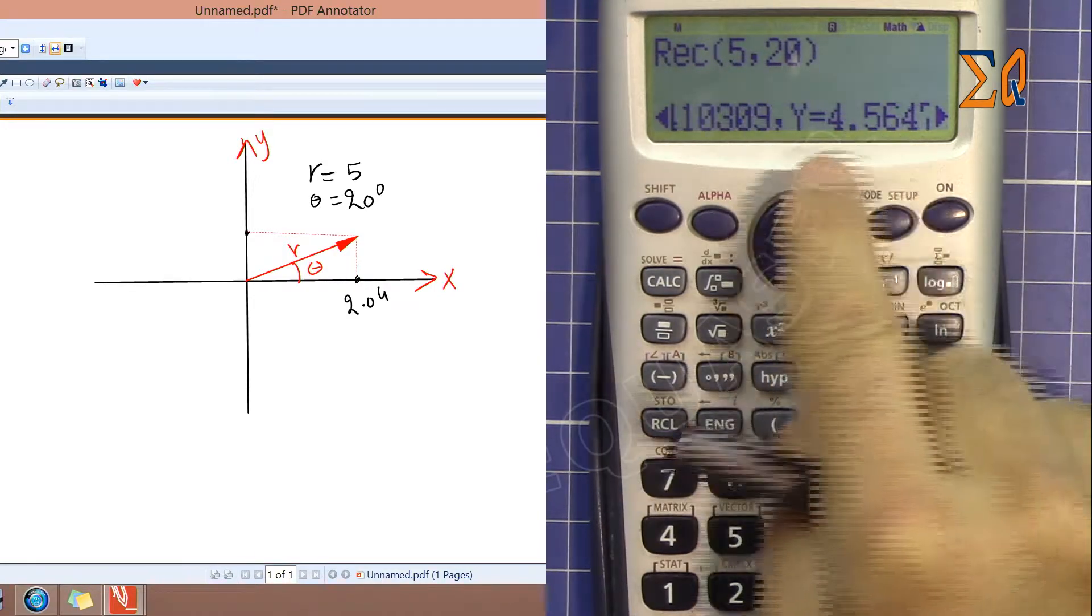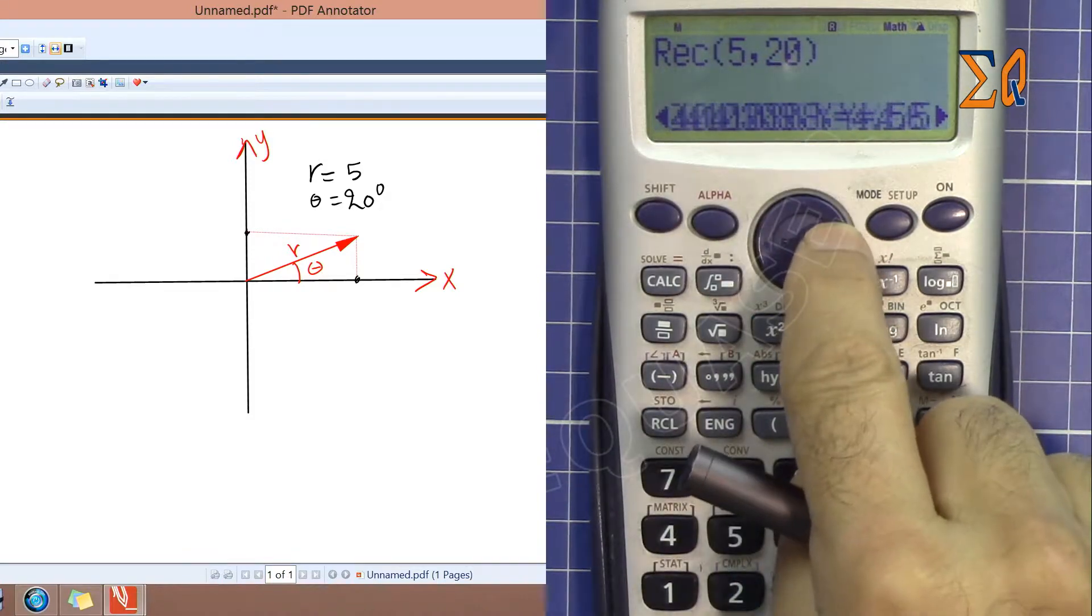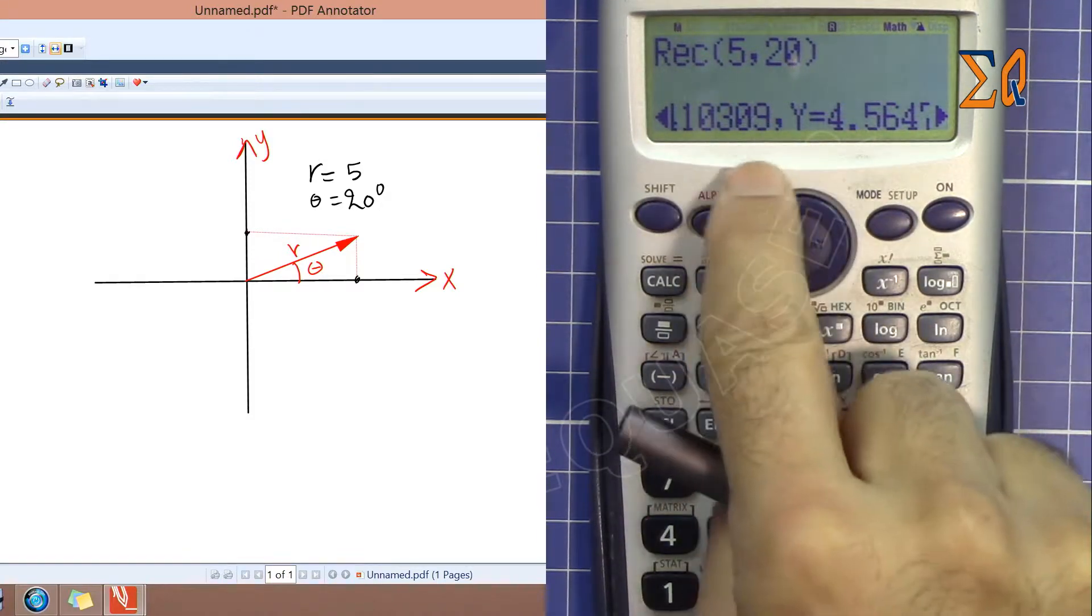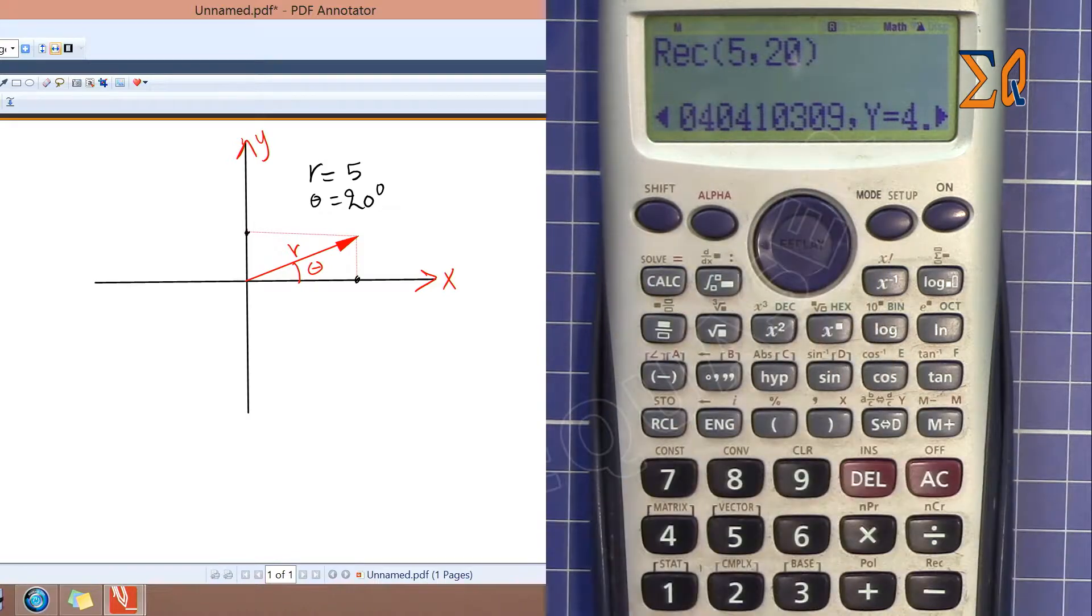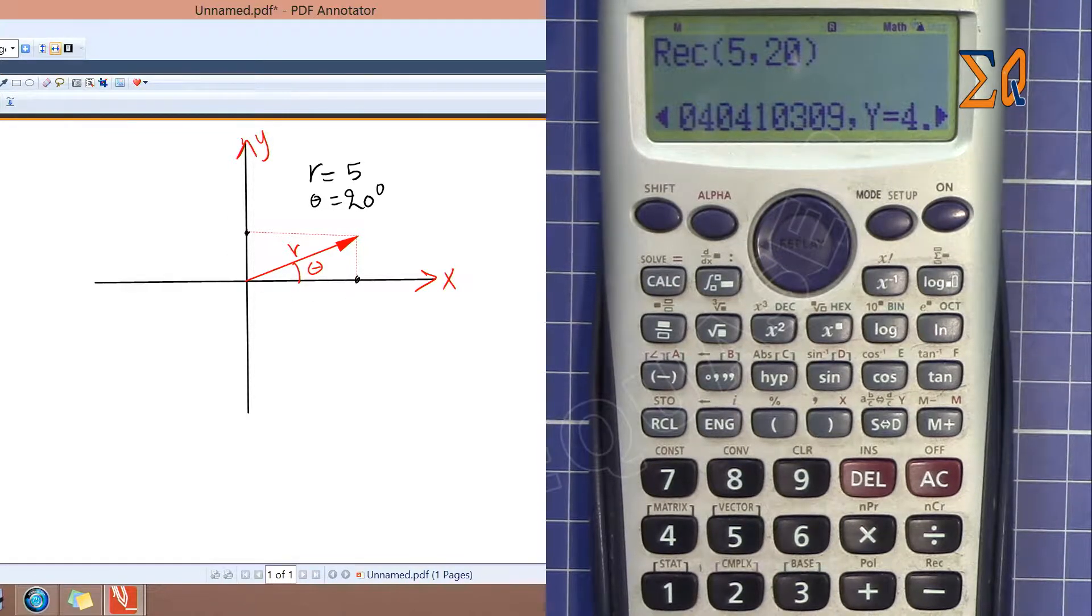If you set this in radian, X is 2 and Y is 4.5. It seems incorrect because X is smaller and Y is larger. This is as if my vector was here.